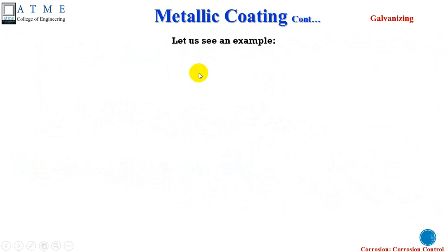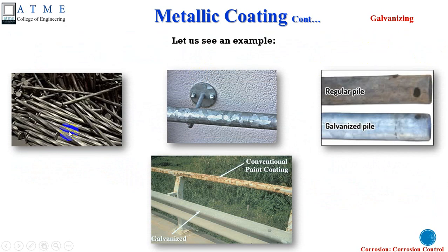Some examples of metallic coating through zinc galvanization include galvanized nails, galvanized handles, and galvanized pipes. Comparing a regular pipe with a galvanized pipe, and a conventional paint-coated metal with a galvanized metal, the galvanized metal does not require any painting and is protected from corrosion.